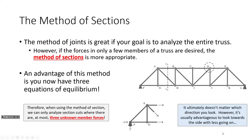Whenever we cut a section through a significant component of the truss — say we cut section 1-1 and look to the left — we are now dealing with a non-concurrent force system. With joints, concurrent forces all intersect at a common point. But with a section cut, forces are going in different directions through different points. The advantage is we can deal with more unknowns at a time. Because we're dealing with a non-concurrent force system, we get to use the sum of moments. With the method of sections, you can analyze section cuts where there are at most three unknown forces.